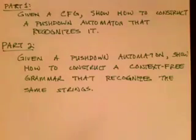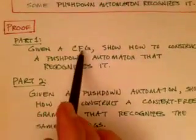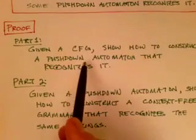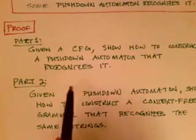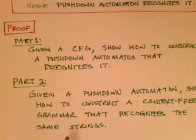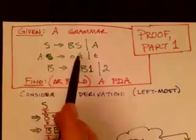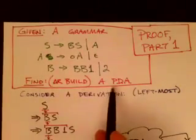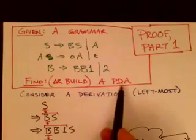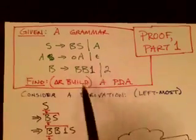Both parts are a little bit long and involved. In this video, I'm going to look at part one — given the context-free grammar, we're going to talk about the algorithm for turning it into a pushdown automaton. Then in the subsequent video we'll show the reverse direction. Here's an example grammar. Given a grammar like this, we want to show how to find or build an equivalent pushdown automaton. Don't worry too much about the details of the grammar; it's the idea we're more concerned about.